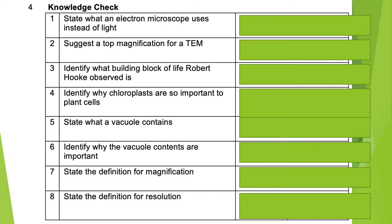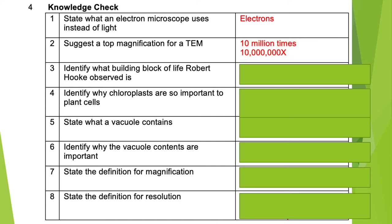Number one asks what an electron microscope uses instead of light — just like the name implies, this one uses electrons. Number two asks for a top magnification for a TEM. TEM stands for transmission electron microscope, which is much more powerful than a light microscope, and the specific number we're looking for is 10 million times. Number three asks what building block of life Robert Hooke observed. Hooke wrote Micrographia and coined the term cell — the cell is the building block of life.